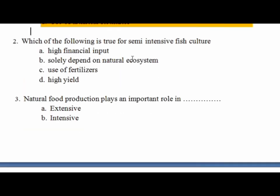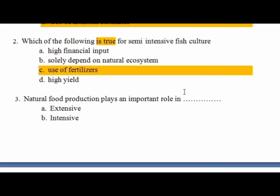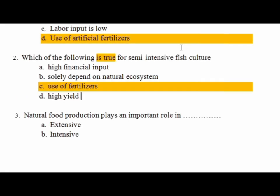Question 2: Which of the following is TRUE for semi-intensive fish culture? Option A — high financial input: semi-intensive does not have high financial input. Option B — fully dependent on natural ecosystem: semi-intensive uses both natural food and supplemental feed, so it is not fully dependent on the natural ecosystem. Option C — use of artificial inputs like pellet feed: that is more intensive. Semi-intensive gives moderate yield, not high yield — high yield is intensive. The correct characteristic of semi-intensive is moderate yield.